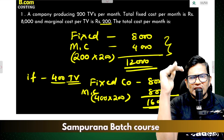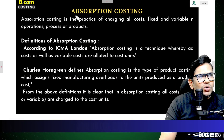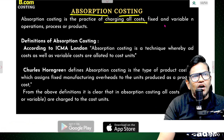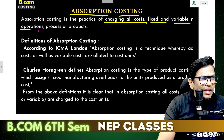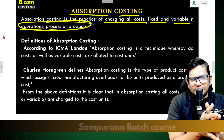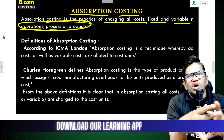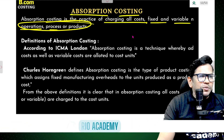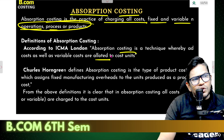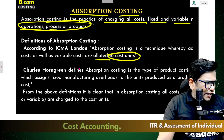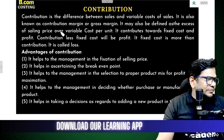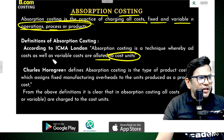Next topic: absorption cost. Absorption costing is the practice of charging all costs - fixed cost and variable cost - in the production process and to the product. Traditionally, all costs in the process are absorbed into the cost of the product. That is called absorption costing. This is the absorption cost.